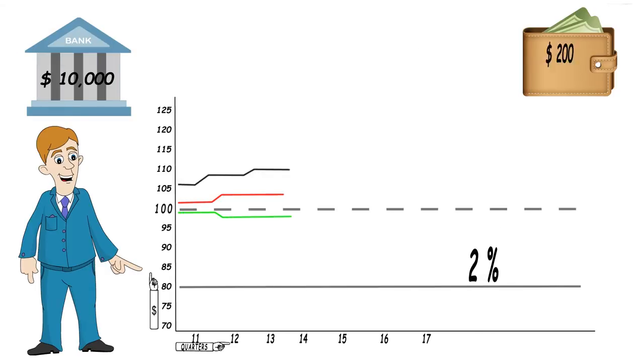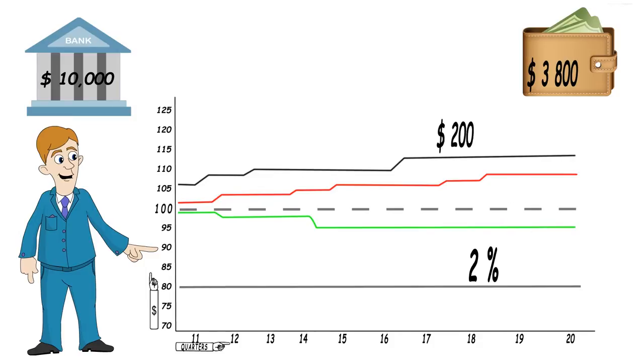So let us now fast forward to the end of the term. Our five years is up, and as you can see, all of our indexes are above the coupon barrier threshold.